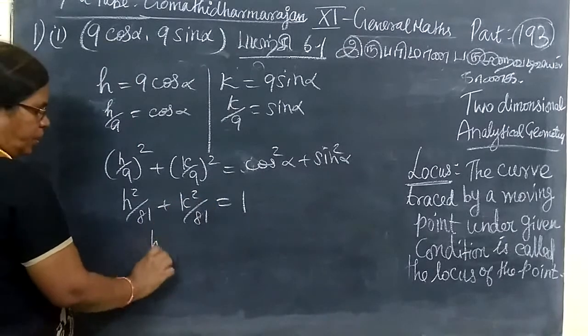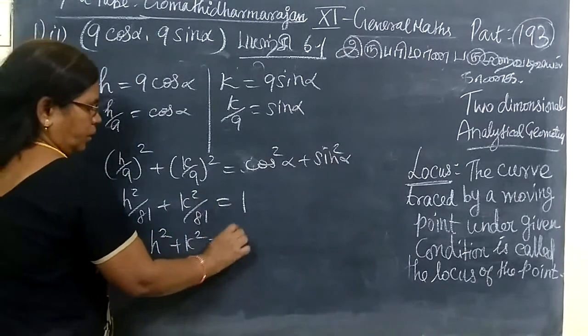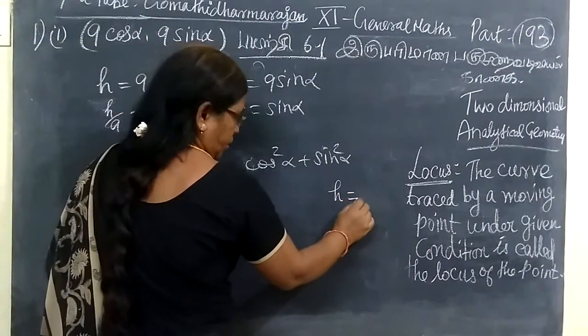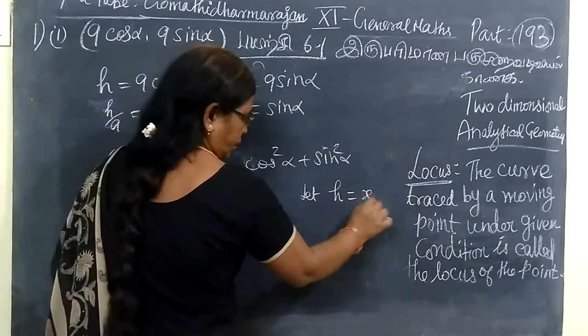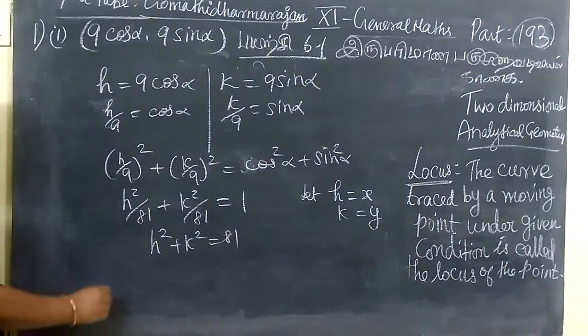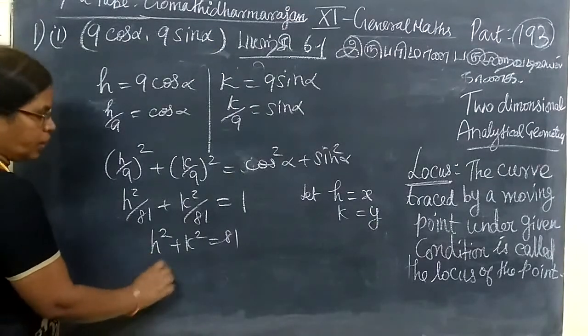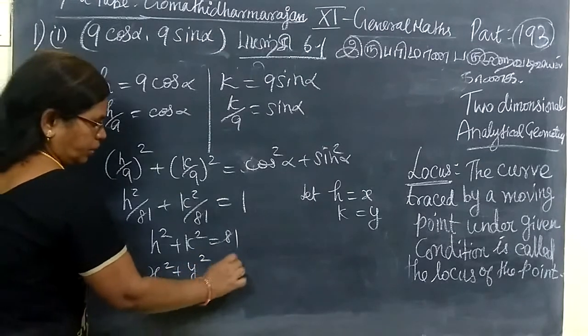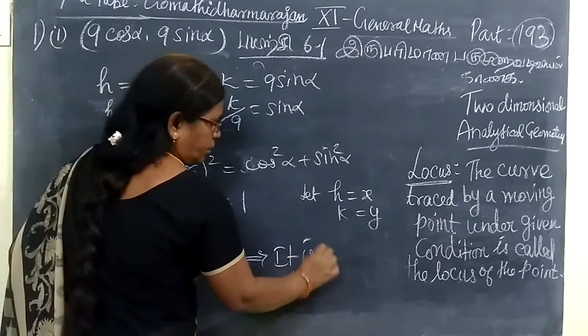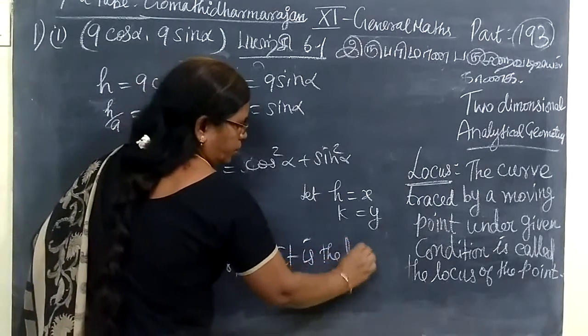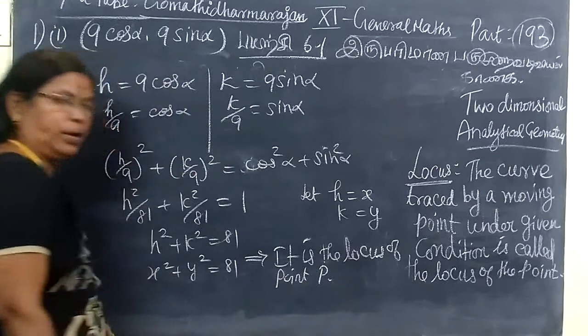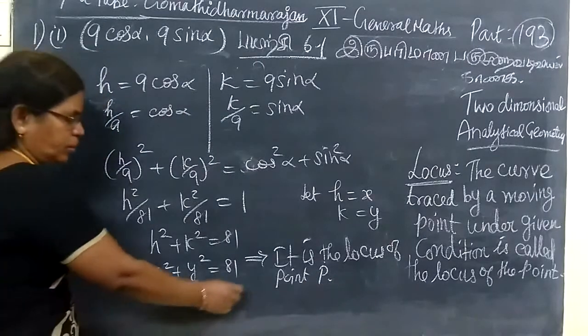So, we let x equal to h and k equal to y. What is it? X square plus y square equal to 81. This implies it is the locus of point P. This is nothing but a circle.